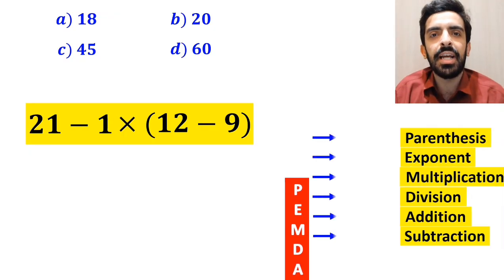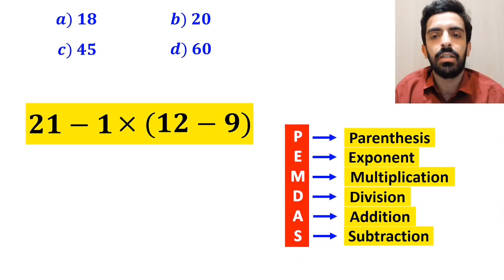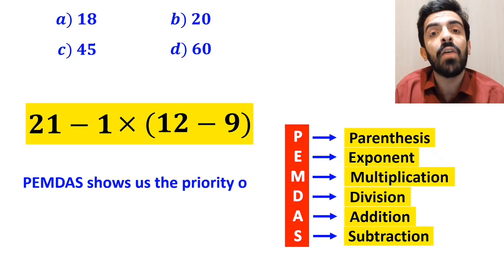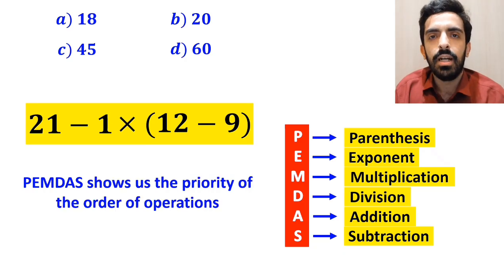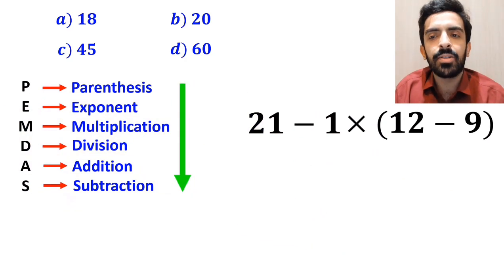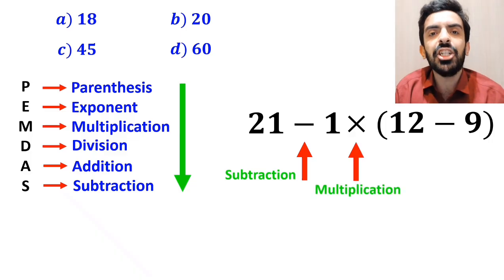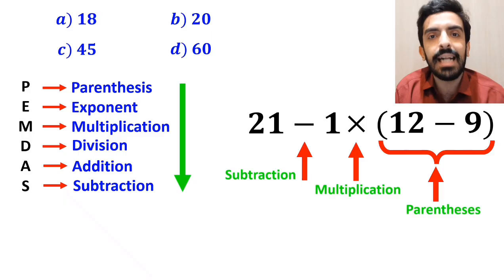Alright, now let me explain step by step how to solve this expression properly. To solve this question, we need to follow the PEMDAS rule step by step. PEMDAS shows us the priority of the order of operations. Alright, as you can see on the screen, in this expression, first we have a subtraction sign, then a multiplication sign, and finally parenthesis.